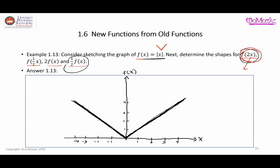Therefore we should be able to recognize that there will be a horizontal change. Since the constant is equal to 2, you multiply by 2, so we know that the graph is going to be horizontally compressed. This means you can expect the graph to be compressed inward from both directions. The point at (0, 0) will be maintained as an anchor — it's not going anywhere — but the rest of the points will be horizontally compressed.